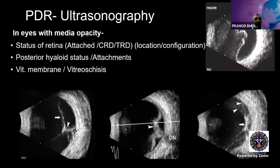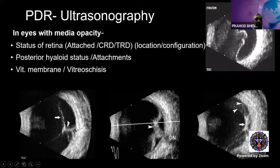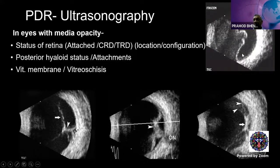Ultrasonography is useful in eyes with media opacity. It helps assess whether the retina is attached or has a tractional or combined detachment, and if so, the location and configuration — whether there is a focal attachment, hammock-like tenting, or a tabletop configuration. The status of the posterior vitreous detachment can also be assessed, particularly when there is a dense vitreous hemorrhage precluding fundus evaluation.